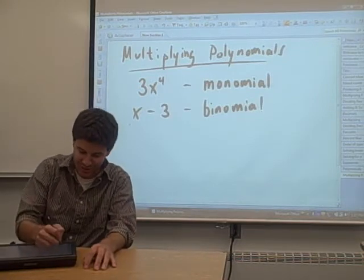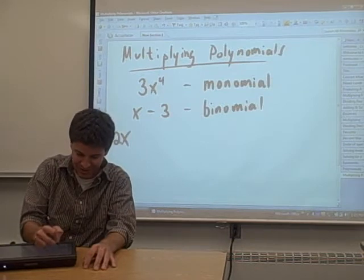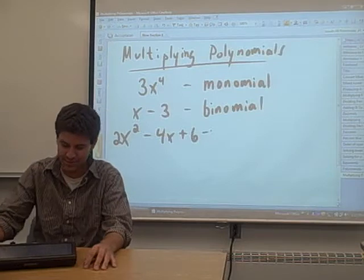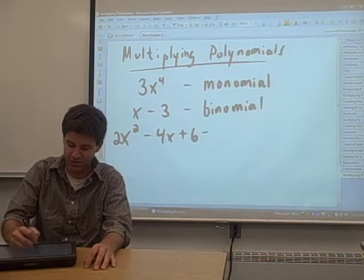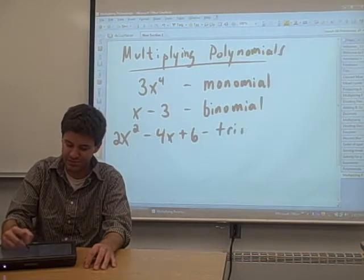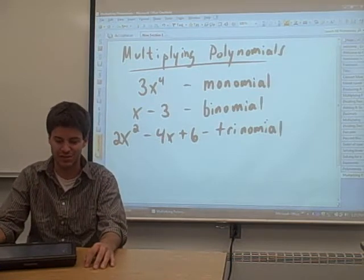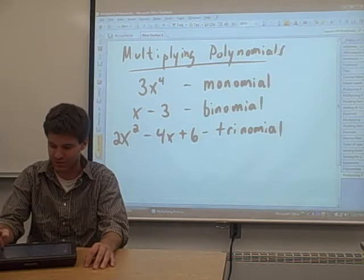And a polynomial with three terms in it, say 2x squared minus 4x plus 6, three terms there, it's called a trinomial. I'm going to use these words in the following video, so I figured I'd remind you the definitions.